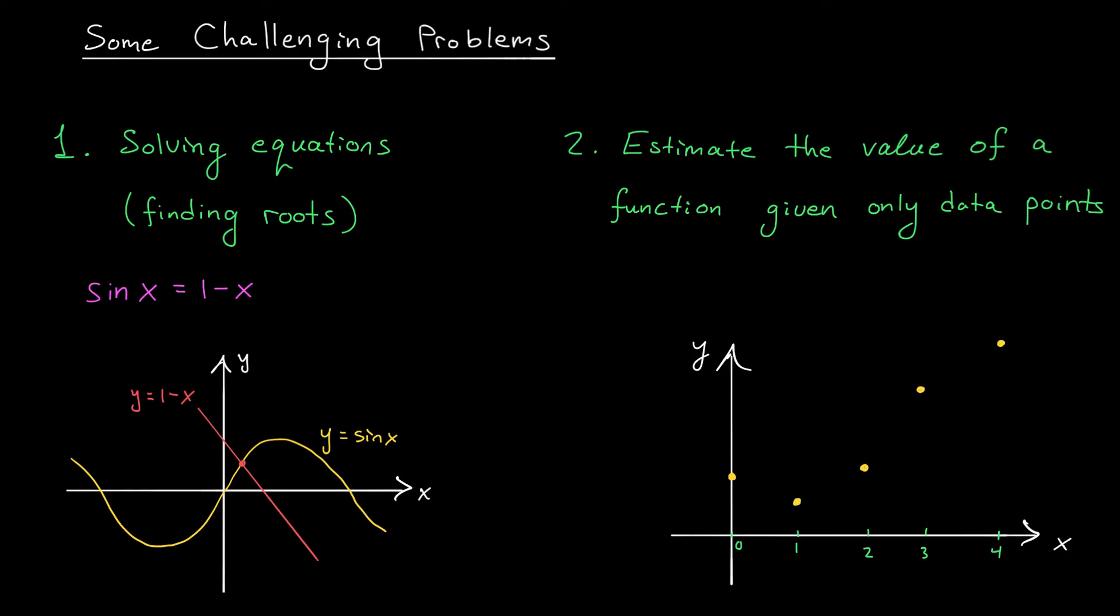So what we do is actually pretty cute. We first rewrite this expression so that everything appears on one side. Sine x plus x minus 1 is equal to 0. Notice that now we're looking for the x-intercept of the function on the left.